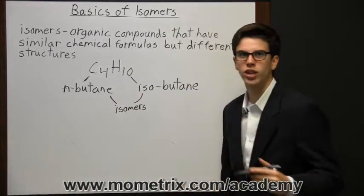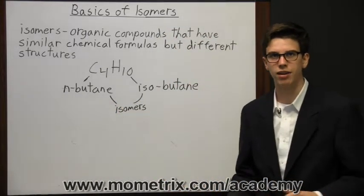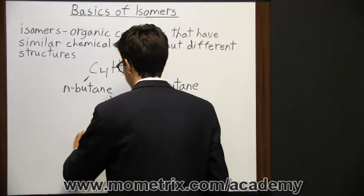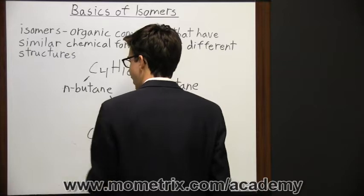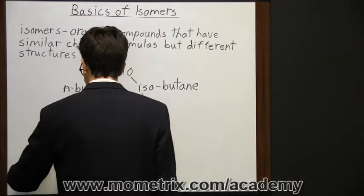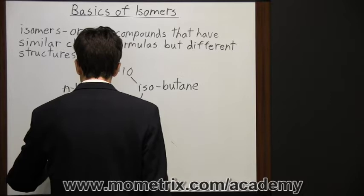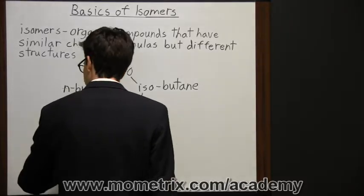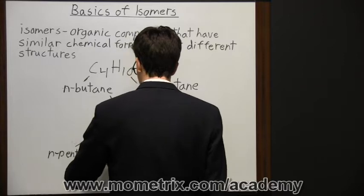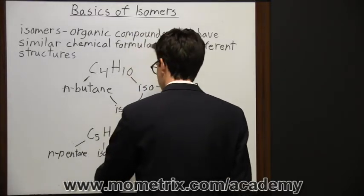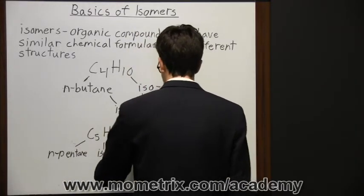Now we come to pentane, which has a structure of five carbon atoms and 12 hydrogen atoms. So here we can have n-pentane, isopentane, and neopentane.